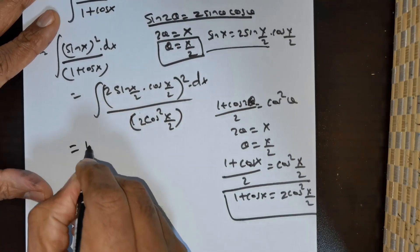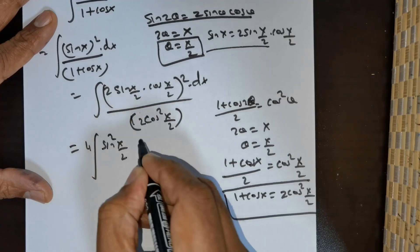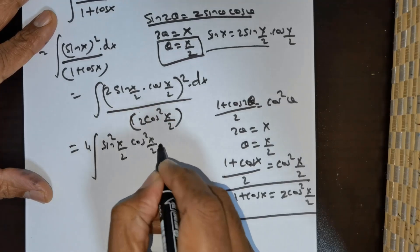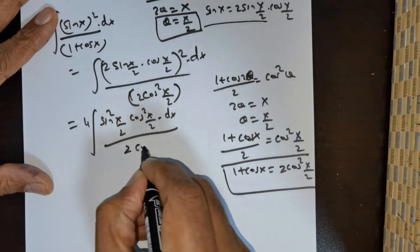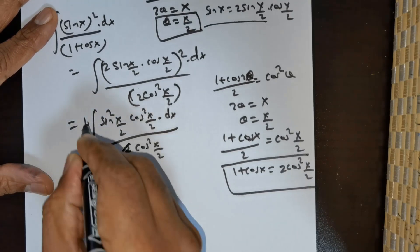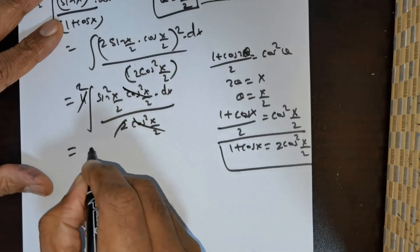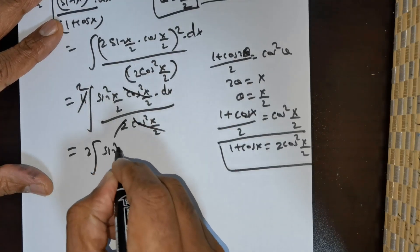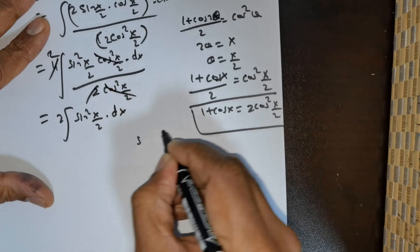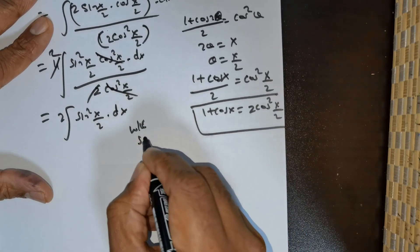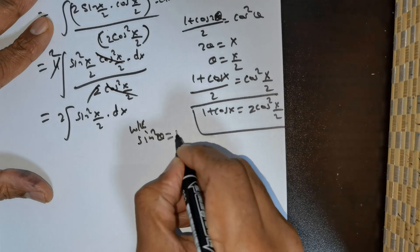Squaring the numerator gives 4·∫ sin²(x/2)·cos²(x/2) dx divided by 2·cos²(x/2). The 2 and the cos²(x/2) terms cancel, giving 2·∫ sin²(x/2) dx.